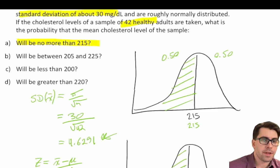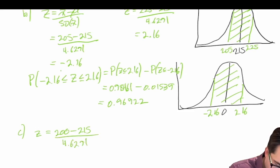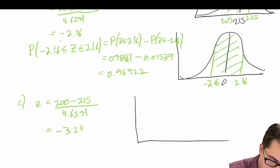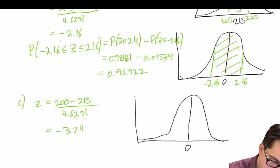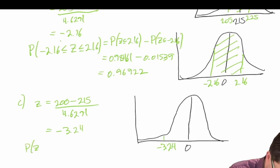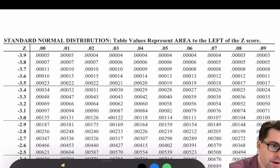Part C: What is the probability the mean will be less than 200? We calculate the z-score: 200 minus 215 divided by 4.6291 gives us a z-score of negative 3.24. On the standard normal curve centered around 0, we have a z-score of negative 3.24, and we're asked for the probability less than that. Looking up negative 3.24 on our z-table gives 0.00060.